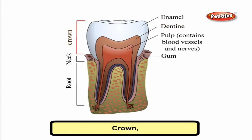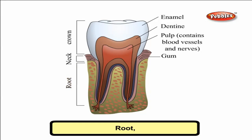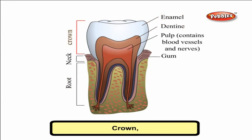The part that can be seen, or the visible part of the tooth, is called the crown. And the lower part is called the root. The root fixes the tooth to the gums. The outer hard white layer of the crown is called the enamel. Enamel is the hardest substance in the human body. The layer under the enamel is called dentine.